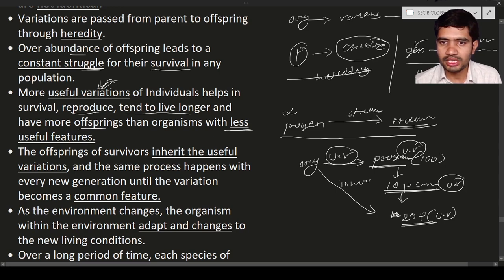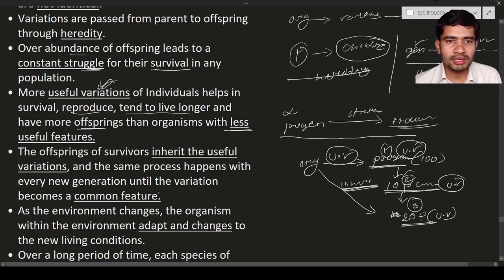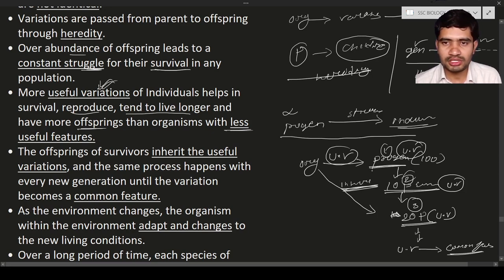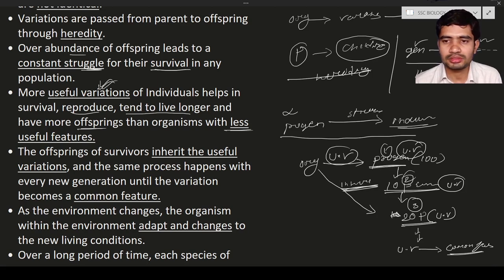This inheritance continues across first, second, and third generations — transferring useful traits from one generation to another and so on. This continues until the useful variations become a common feature. Once it becomes a common feature, the process is complete and new useful variations may then arise.